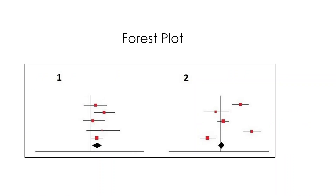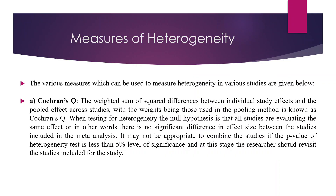You can see here the first plot. The research is carried out by different researchers and most of them are near to each other, with their studies overlapping. This means that the heterogeneity is less. In the second plot, the variations are more and the heterogeneity is more.